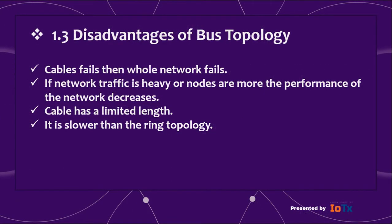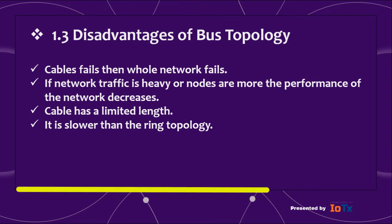Disadvantages of bus topology: if the cable fails, the whole network fails. If network traffic is heavy or nodes are more, the performance of the network decreases. The cable has a limited length, and it is slower than ring topology.